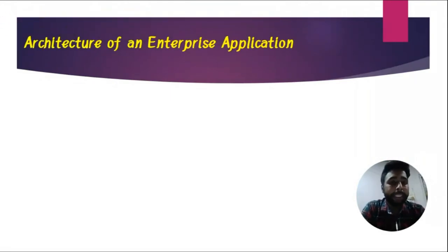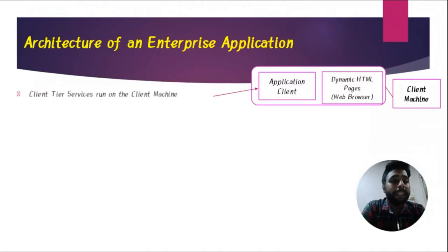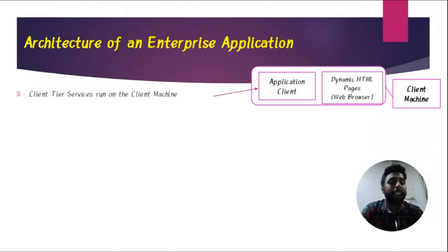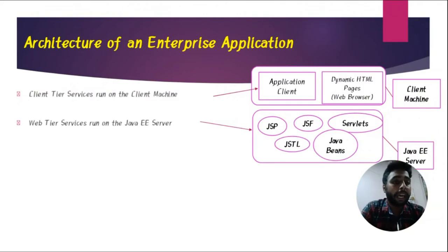We will show a simple diagram here, layer by layer. First is the client tier — client is nothing but something that runs on a client machine. Inside this can be a normal web application or Java application, your dynamic HTML page, the same web page by using Java. Then on a client machine, the second tier is the web tier — by using JSP, JSF, JSTL, Servlet, and Java Beans. Specifically Java application is used, running on a Java EE server.